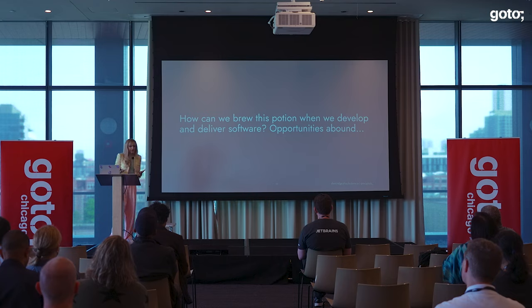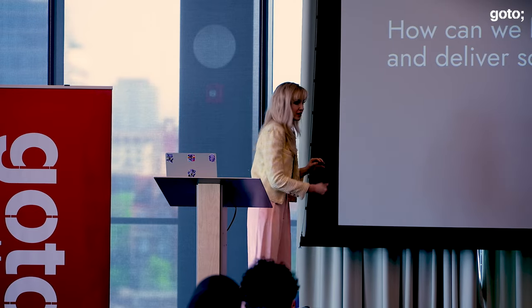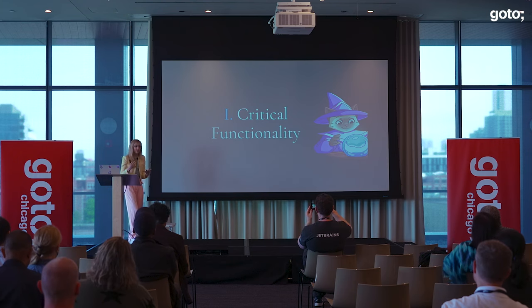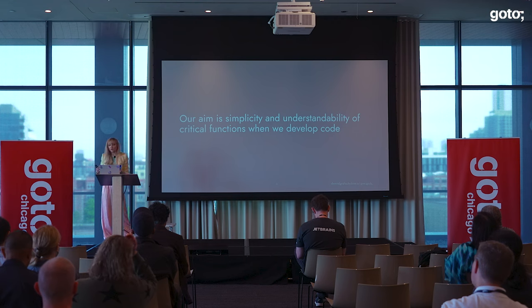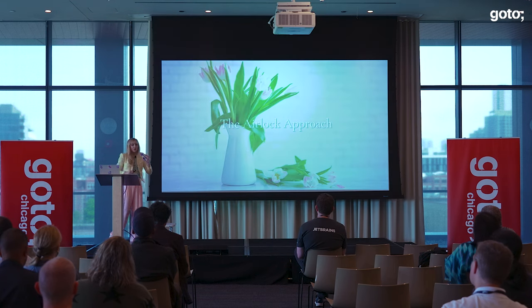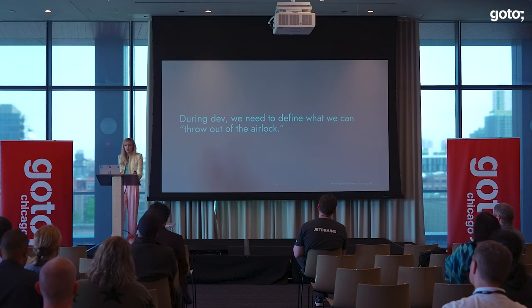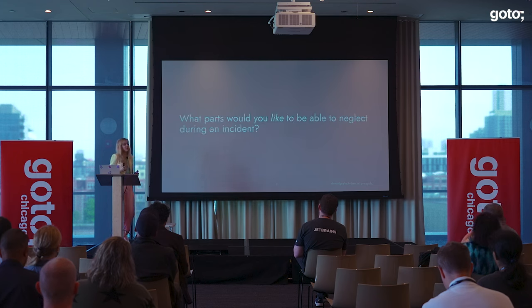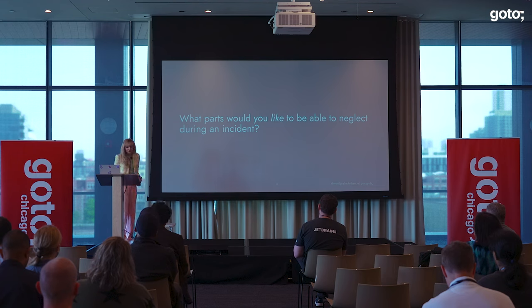So how can we brew this potion when we develop and deliver software? We'll talk about a selection of opportunities today. How do we harvest the first ingredient — understanding the system's critical functionality when writing code? Our aim is simplicity and understandability of critical functions. One practice is what I call the airlock approach: whenever we're building and delivering software, we need to define what we can throw out of the airlock. The question to ask is: what functionality or components can you neglect temporarily and still have the system perform its critical functions? Another way of thinking about it: what would you like to be able to neglect during an incident?